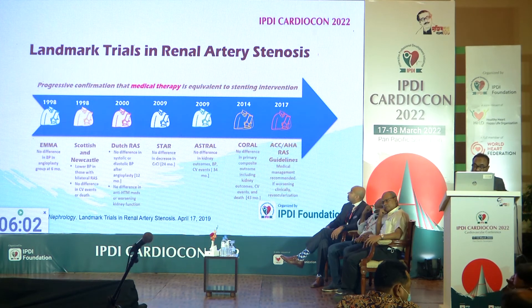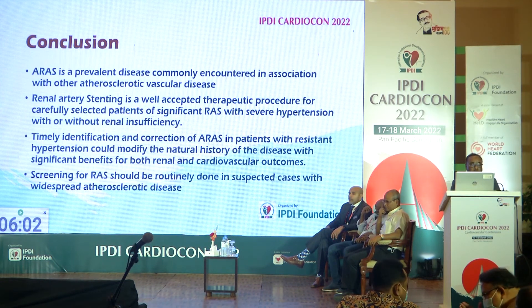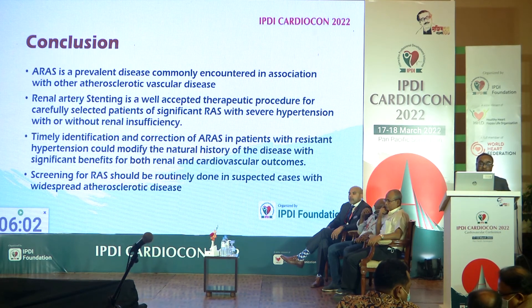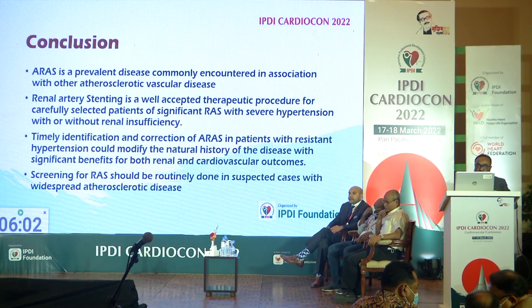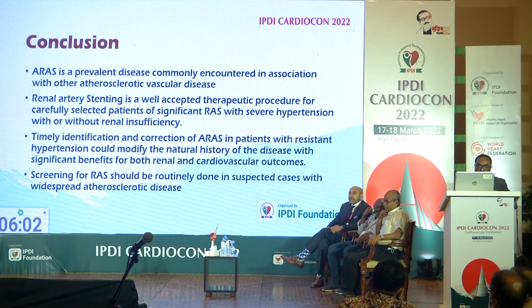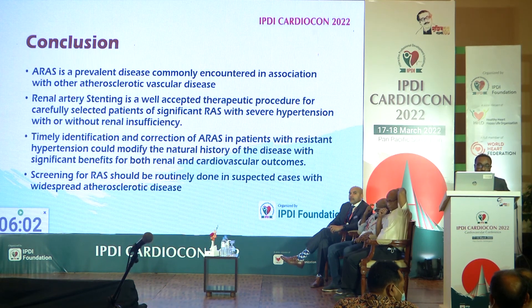Revascularization is indicated for uncontrolled hypertension and flash pulmonary edema. Although RCTs do not strongly encourage renal artery stenting, sporadic results are encouraging. In conclusion, atherosclerotic renal artery stenosis is a prevalent disease commonly encountered in association with other atherosclerotic conditions. Renal artery stenting is a well-accepted therapeutic procedure for carefully selected patients with significant RAS and severe hypertension, with or without renal insufficiency. Timely identification and correction could modify the natural history of the disease with significant benefits for both renal and cardiovascular outcomes. Screening for renal artery stenosis should be routinely done in suspected cases with widespread atherosclerotic disease.